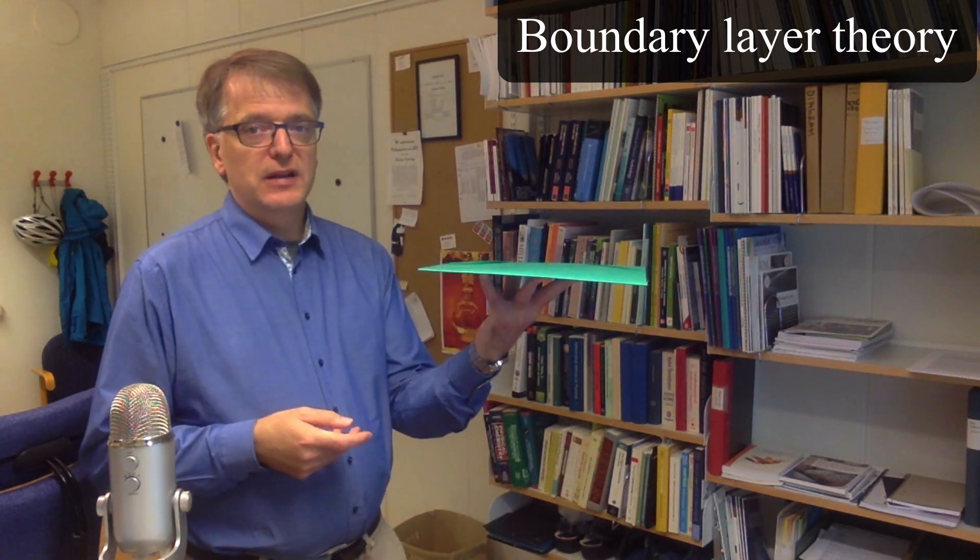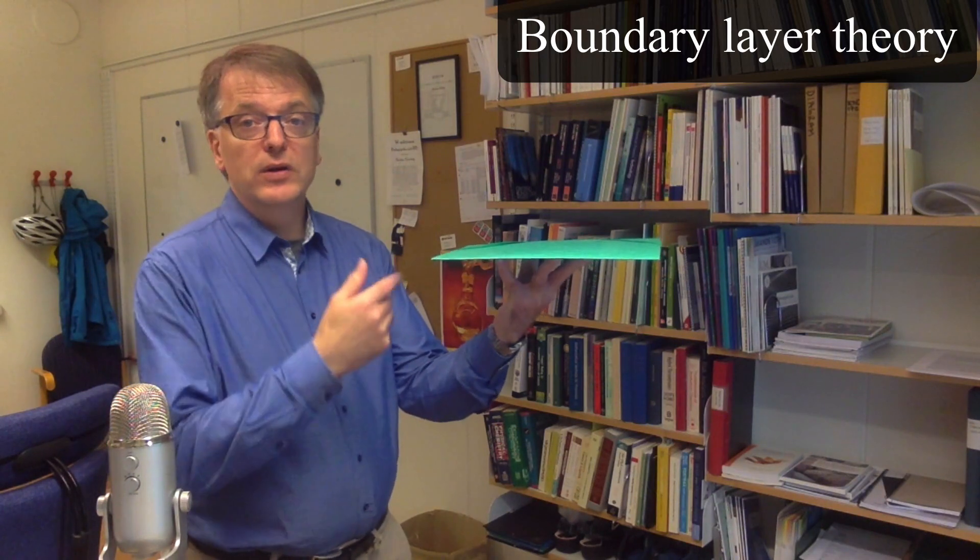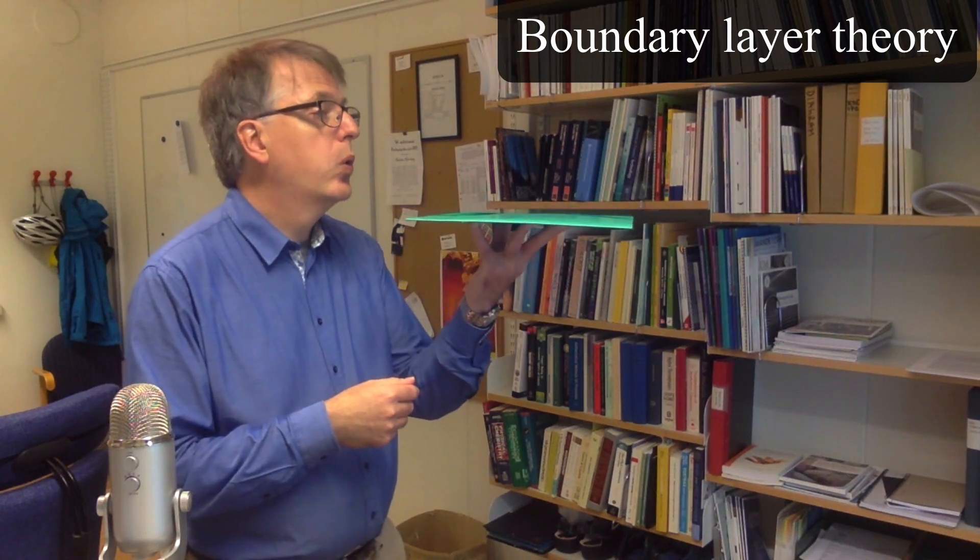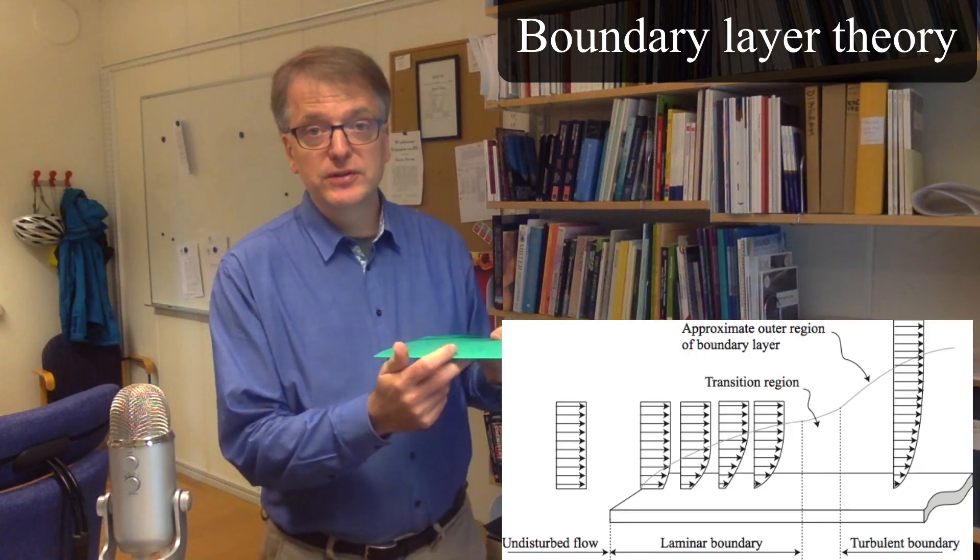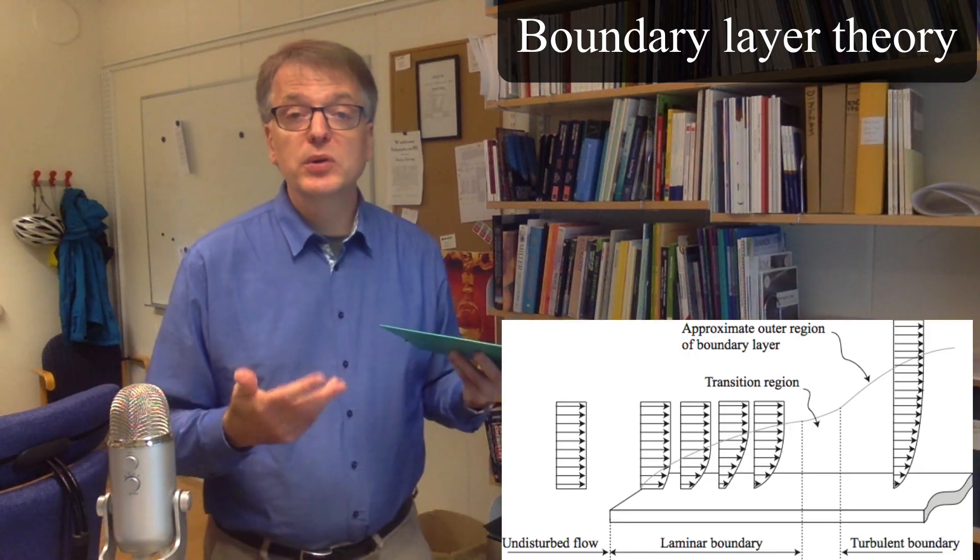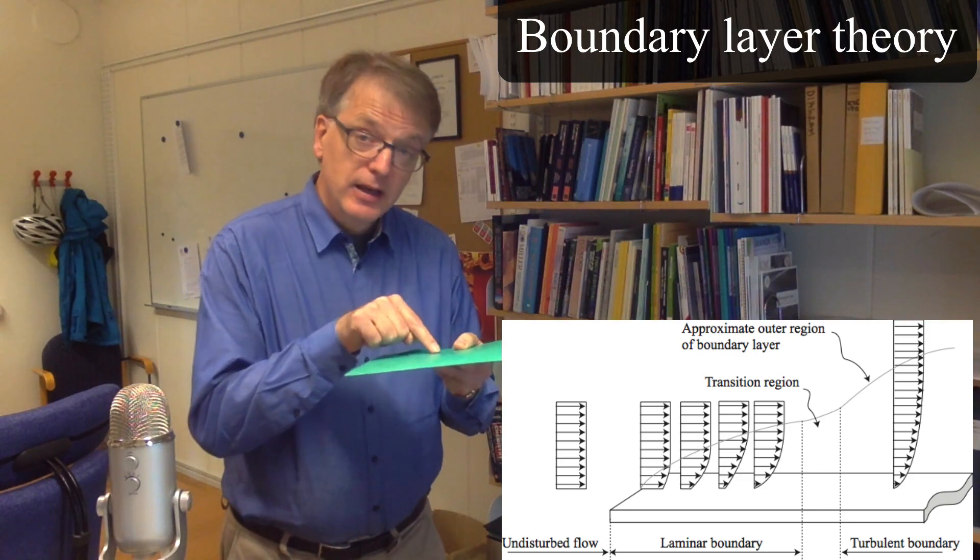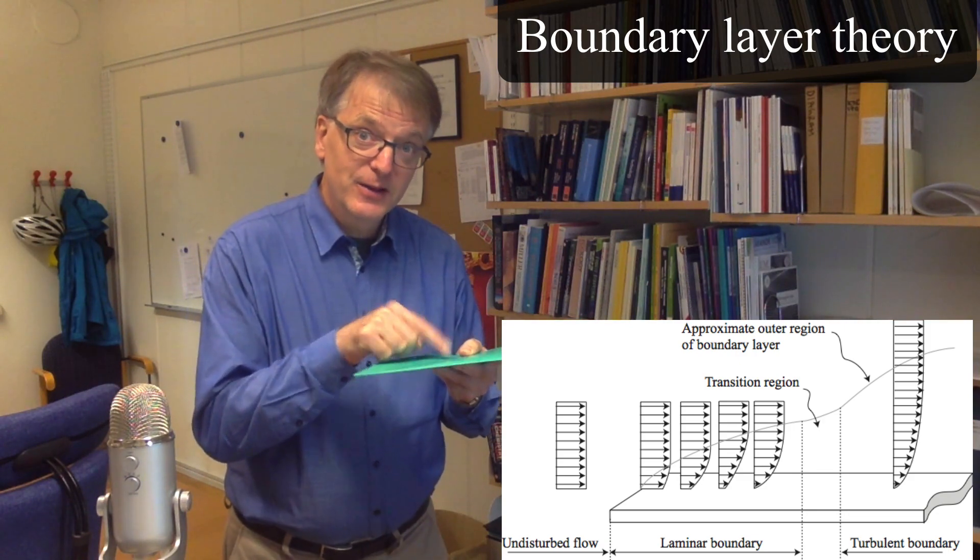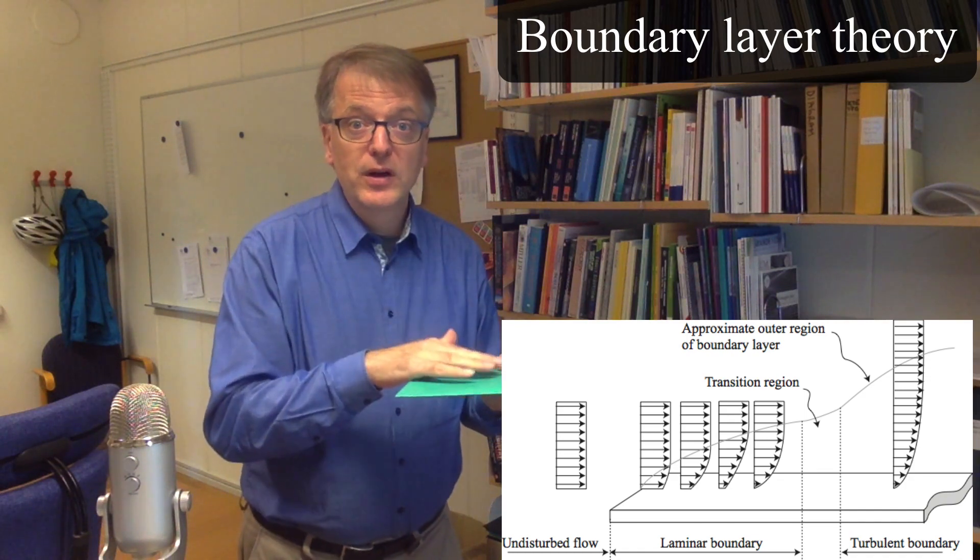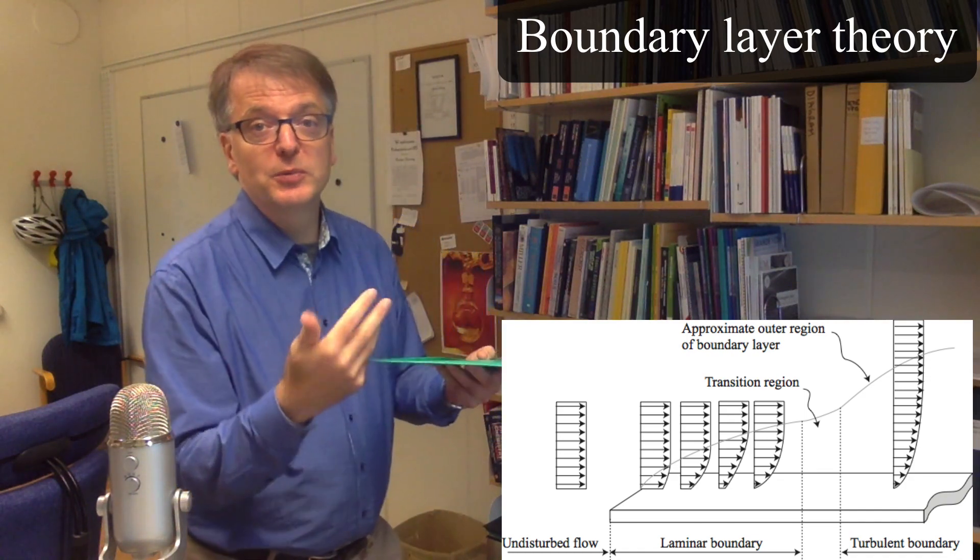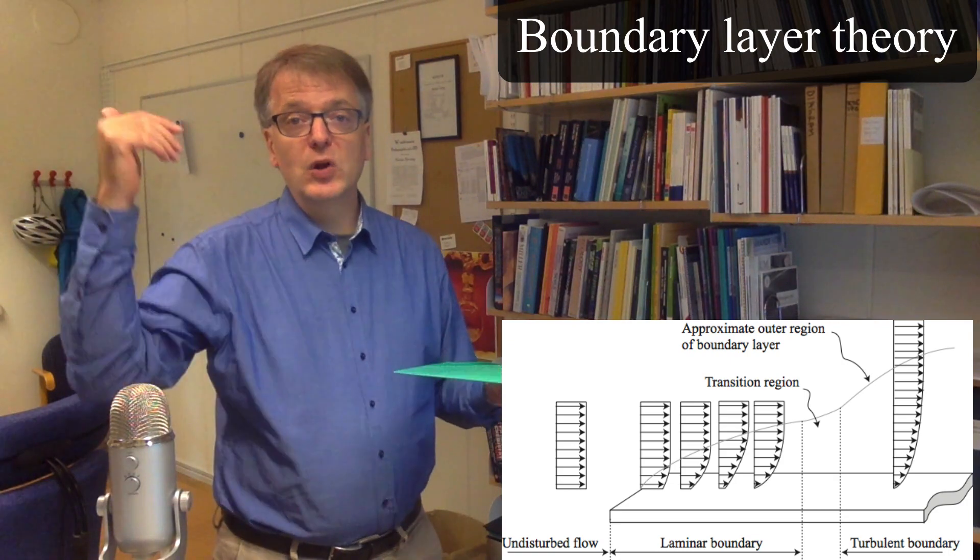Well, if you have a surface like this and you blow along the surface, what happens then is that close to the surface you typically have the so-called no-slip condition, which means that close to the surface the medium, the air in this case, is standing still. And the further away you go, the more you approach the bulk velocity.